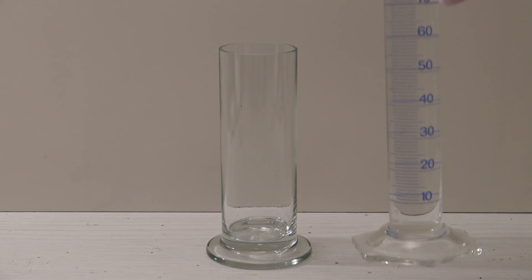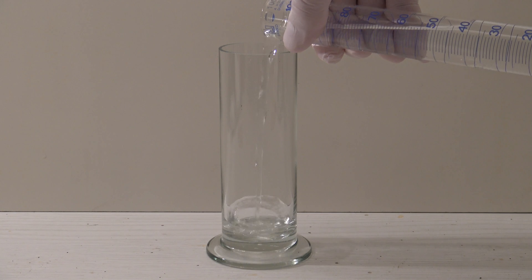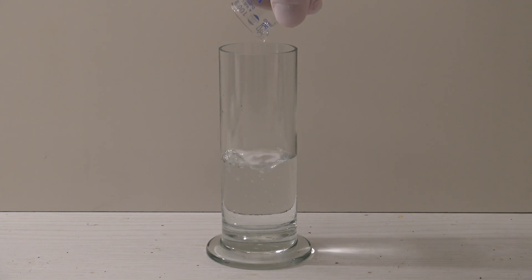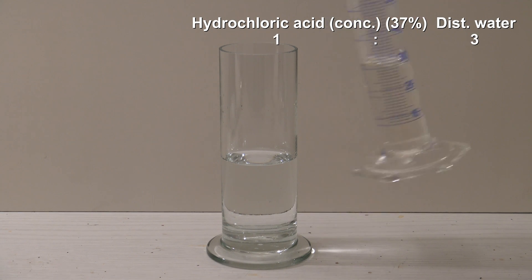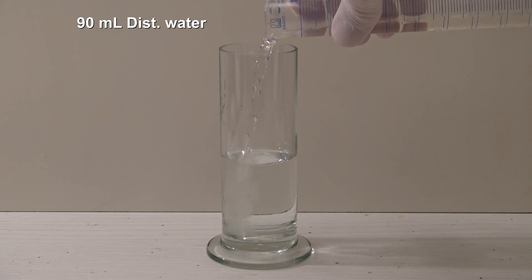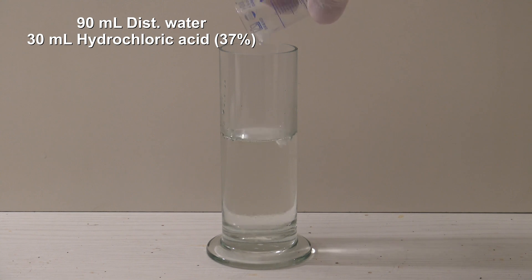For the experiment a container was filled with diluted hydrochloric acid. In this case a cylinder was used and concentrated hydrochloric acid was diluted at a ratio of 1 to 3. So to 90 ml of distilled water 30 ml of acid were added.